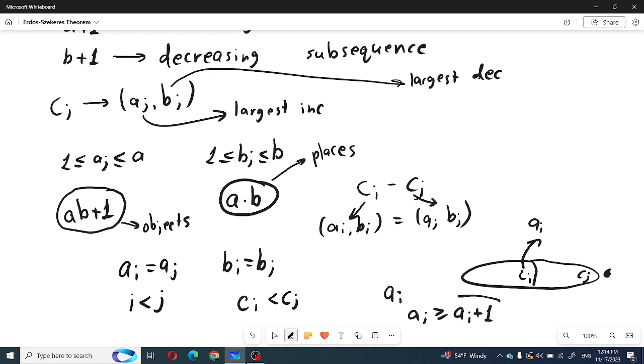Clearly this gives us a contradiction that a_j was equal to a_i, because a_i can't be greater than a_i plus one.